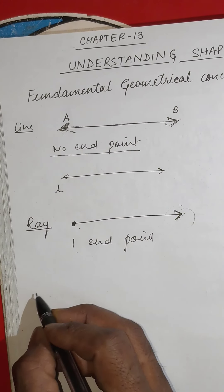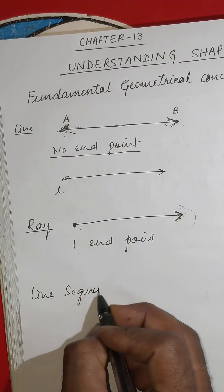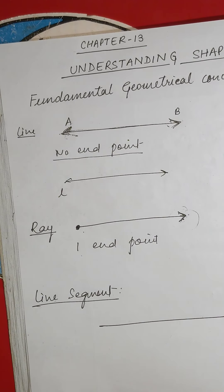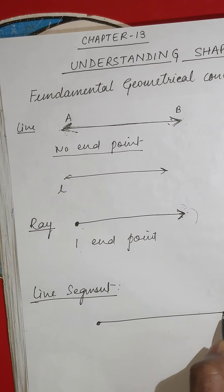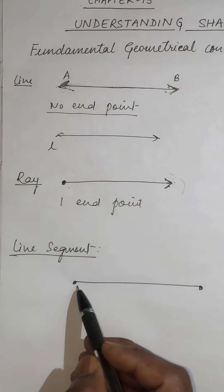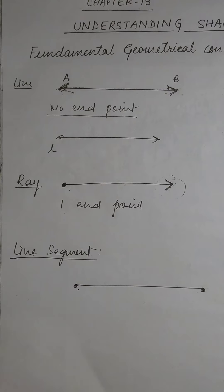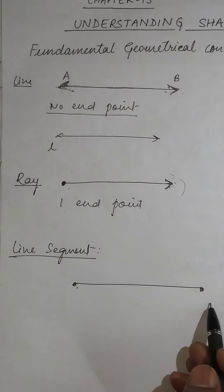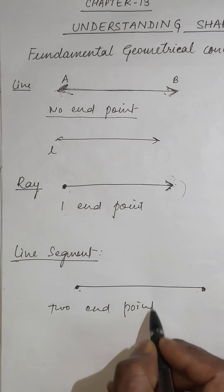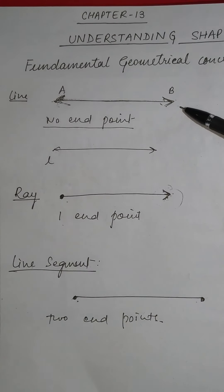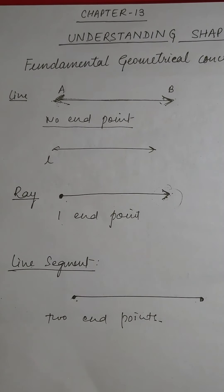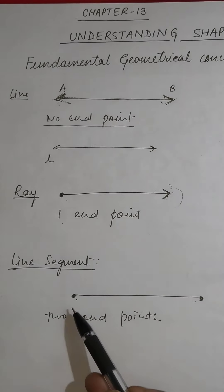The next concept is a line segment. A line segment is a part of a line but with two end points. There will not be two arrows, meaning it cannot be extended in either direction. It has two end points: a starting point and an end point. Remember — a line has no end points, a ray has one end point, and a line segment has two end points.